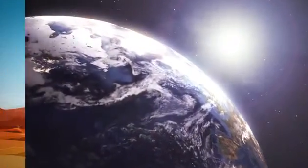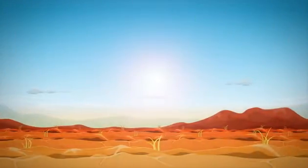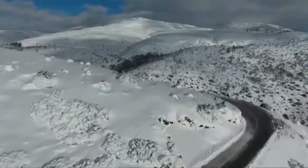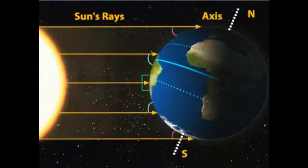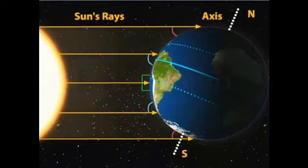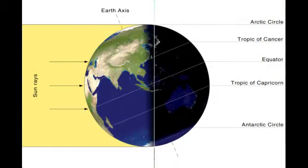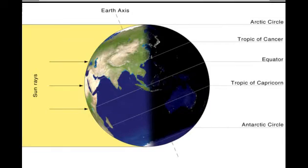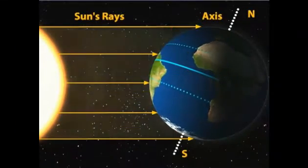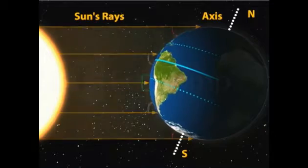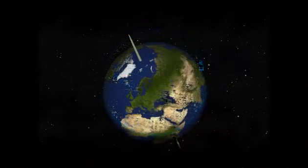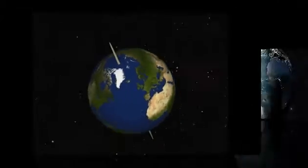That is why some places are hot and some other places are cold. First I will tell you why there are differences in the distribution of temperature or heat over the surface of the earth. The major reasons behind this are angle of the sun's rays, shape of the earth, and the tilted axis of the earth.